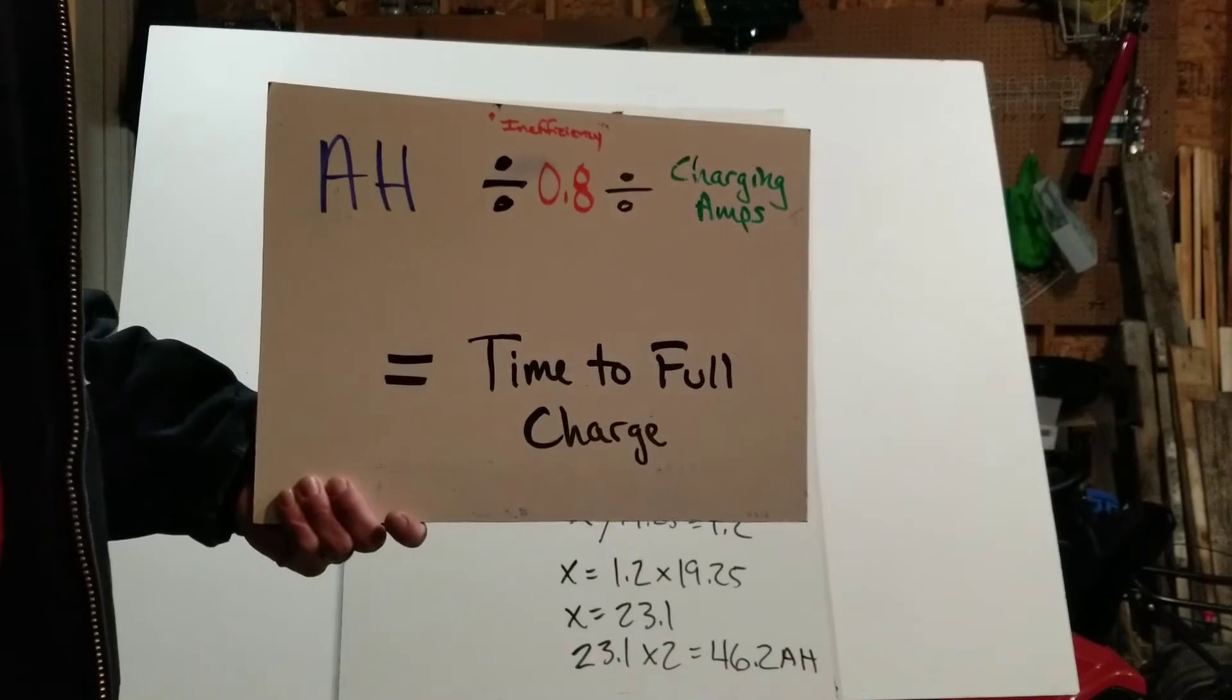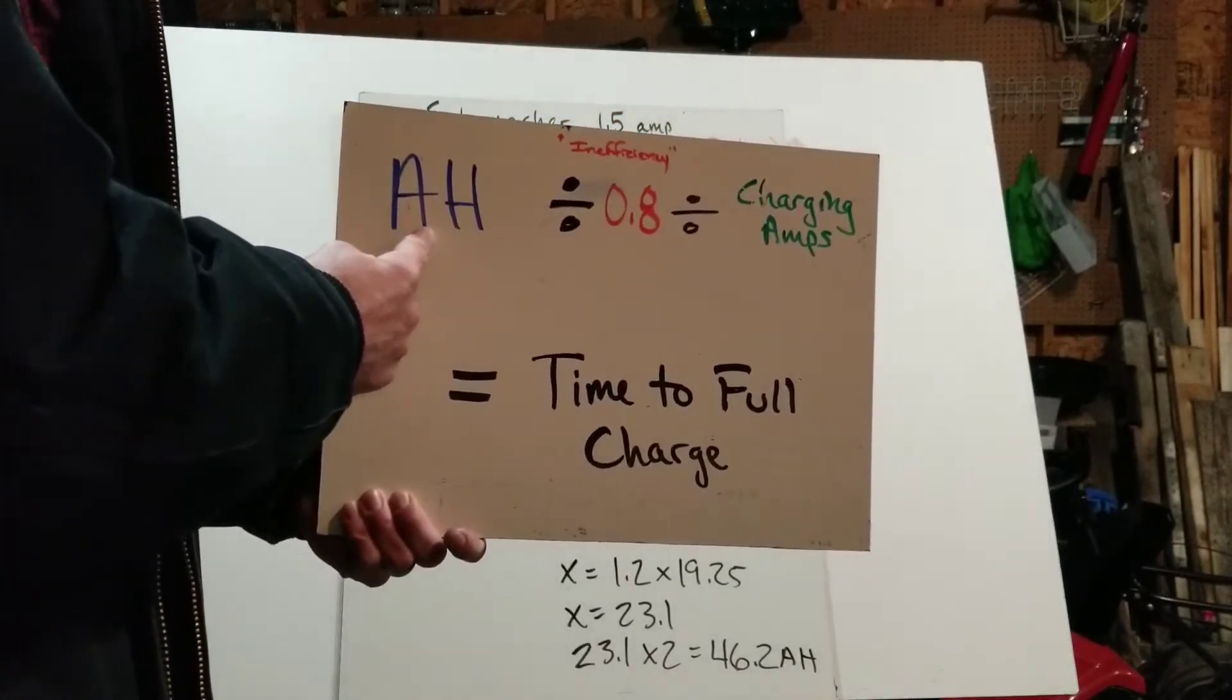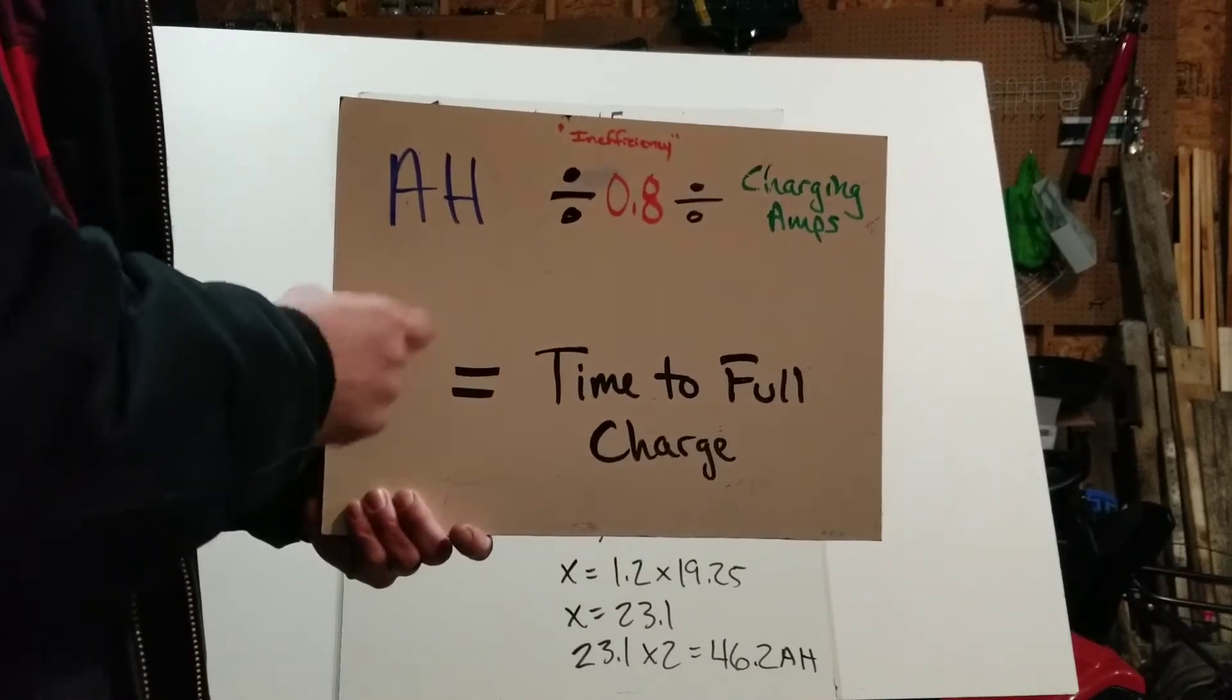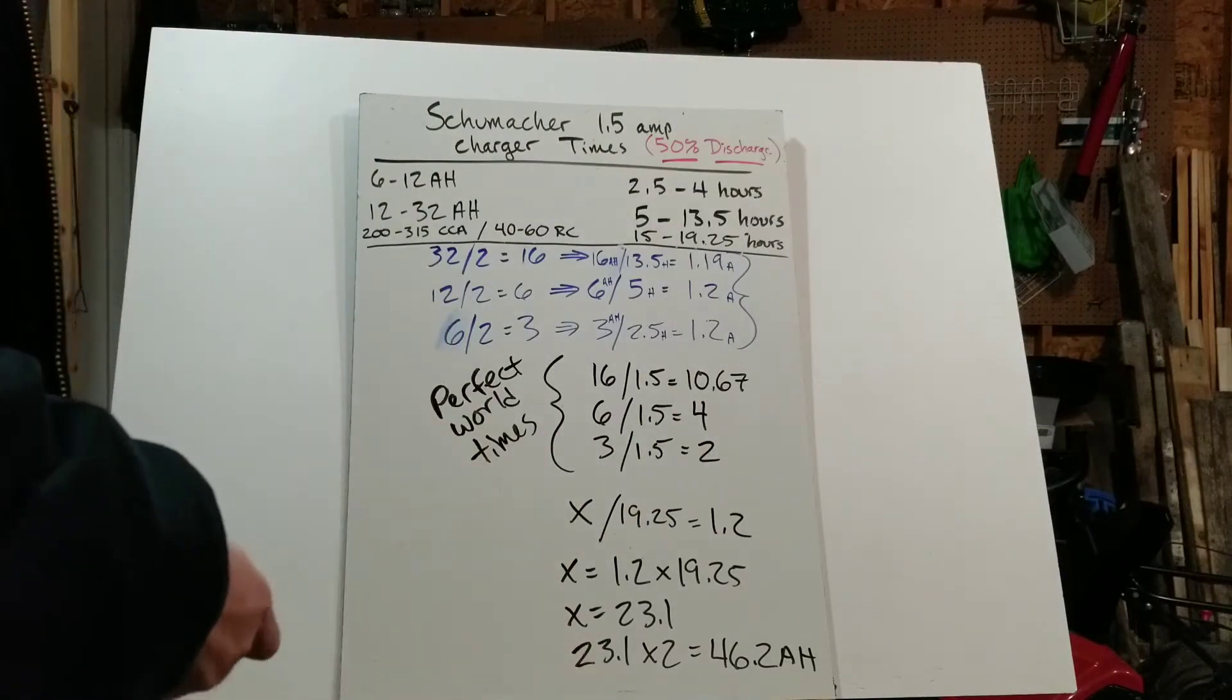But if you know anything about car batteries, you're probably saying car batteries don't come in amp hours. They come in cold cranking amps or cranking amps or reserve capacity. So that's why I have the math here, and that'll bring us into our next discussion. So let's get right to that.